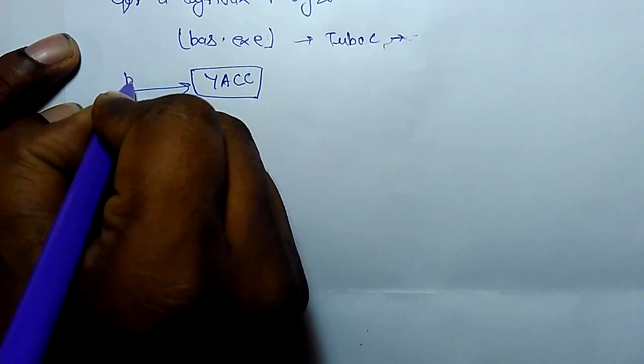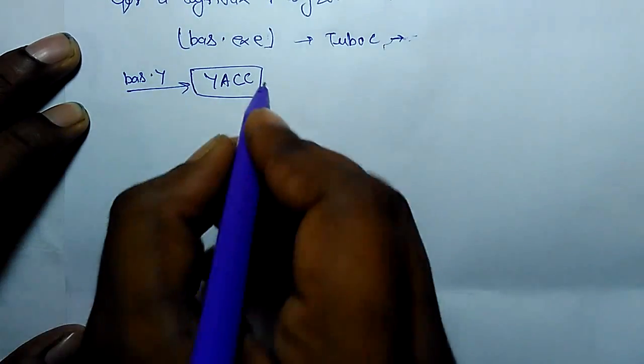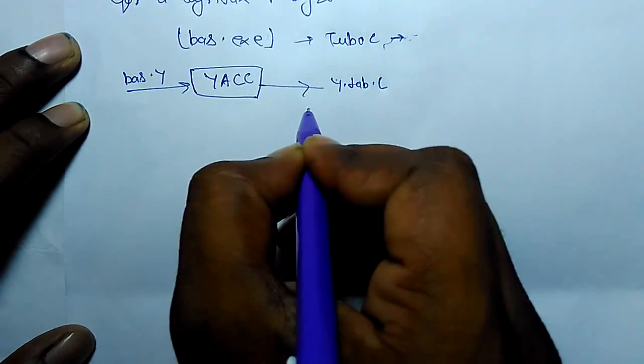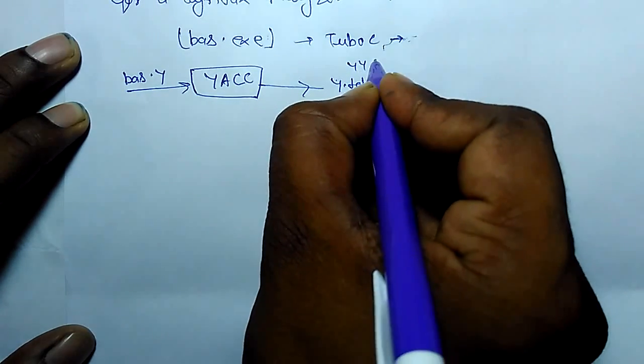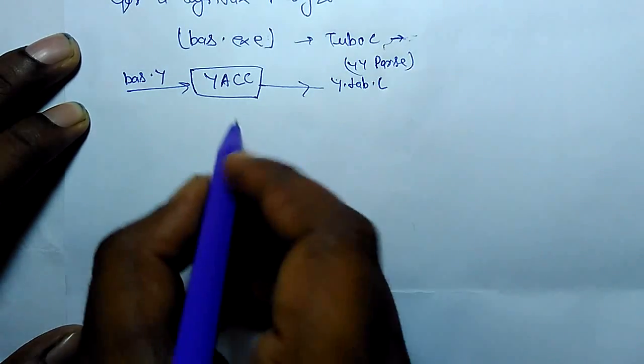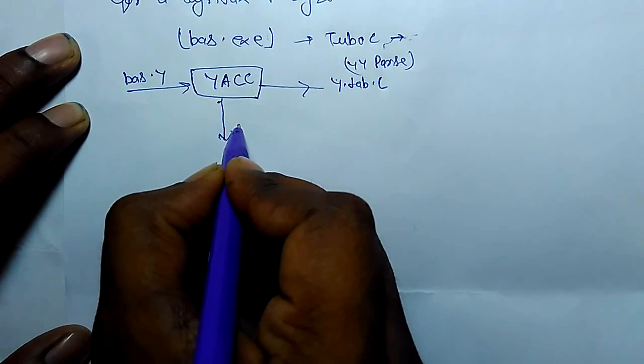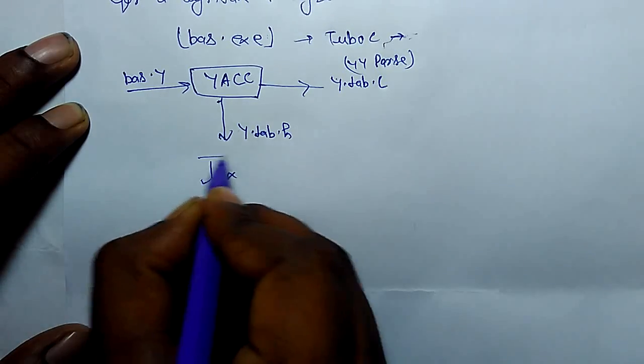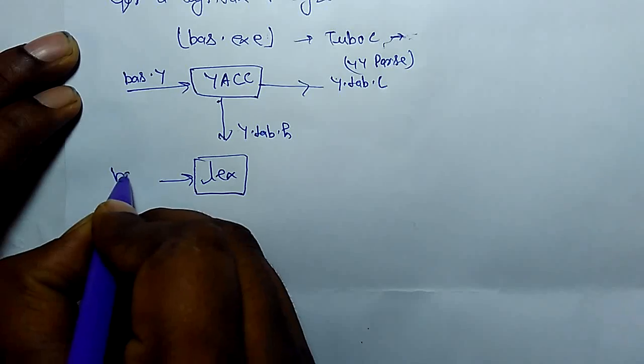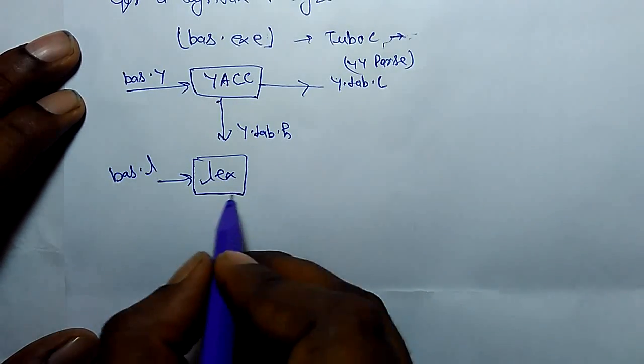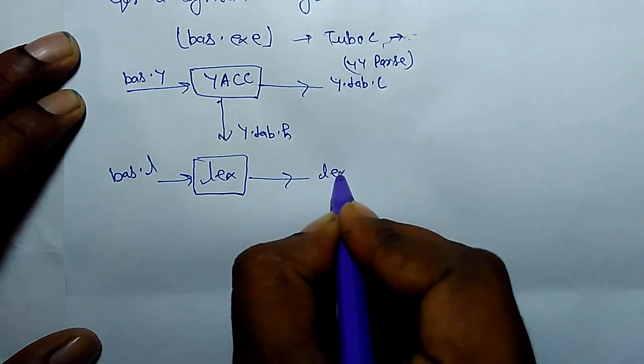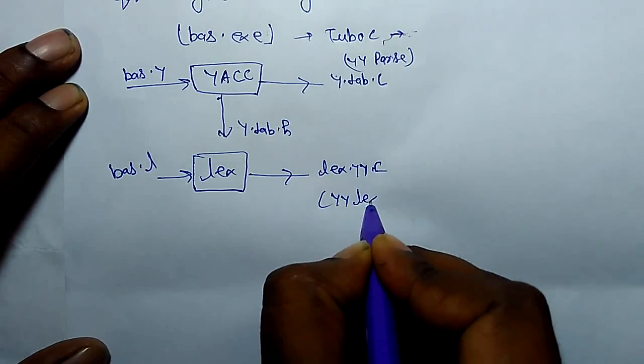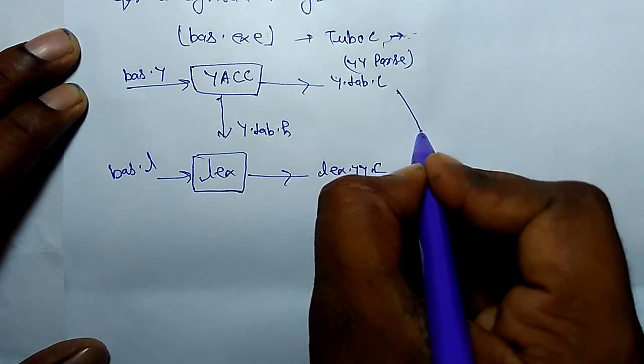YACC takes input as bash.y, extension of .y, and it generates output y.tab.c which includes a function yyparse, and one header file y.tab.h. And LEX takes input with extension of .l and generates a C file lex.yy.c which includes a function yylex.